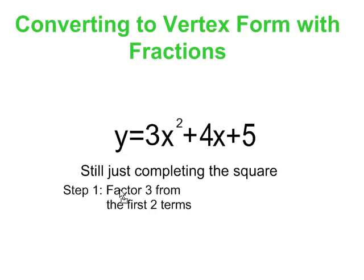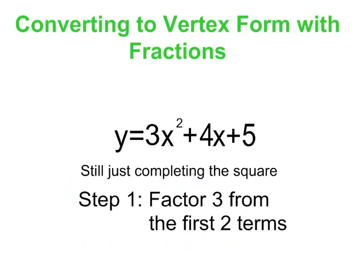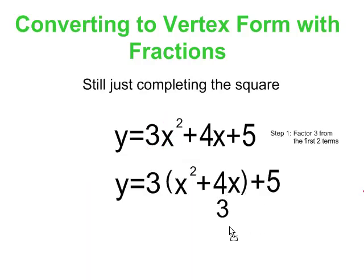So in this case, step 1, I'm going to factor a 3 from the first two terms in order to make a perfect square trinomial. And when I factor a 3 from the 4x term, it becomes 4/3x.